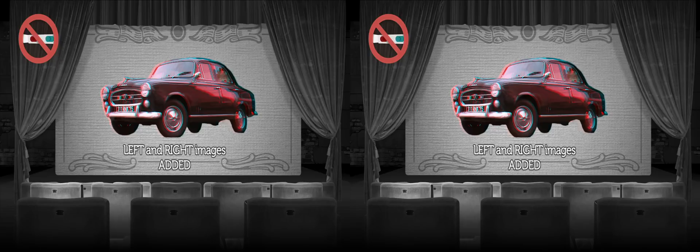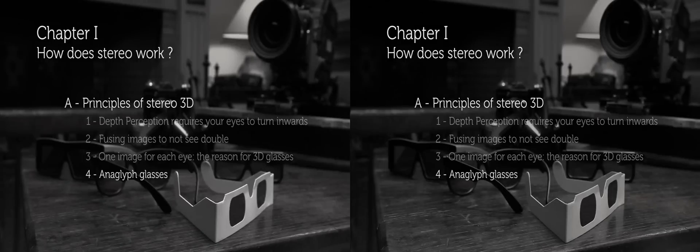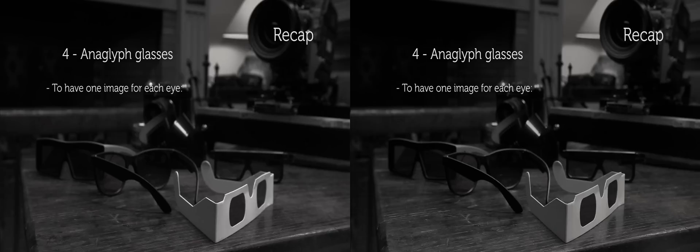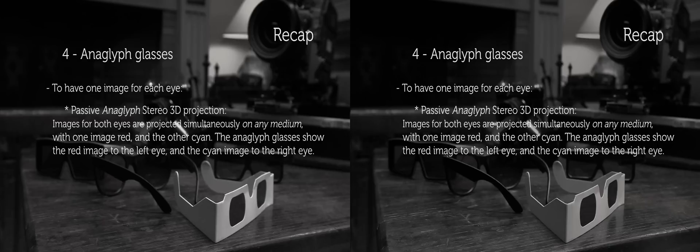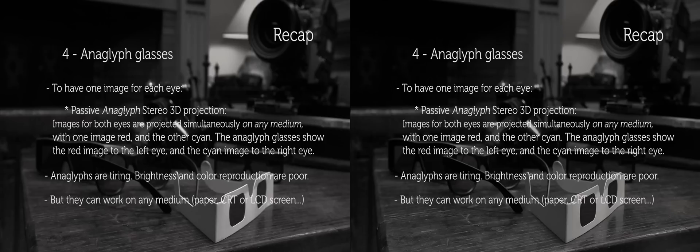Take your glasses off, and I'll show you how to build anaglyph images in post-production. It's quite simple: we remove the red component from the right image, which then becomes cyan. Then we take the blue and green components of the left image, which becomes red. We first superimpose these left and right eye images, then add them together — and that's our anaglyph image. It works for both color and black and white images. In passive anaglyph stereo 3D projection, images for both eyes are projected simultaneously on any medium with one image red and the other cyan. The anaglyph glasses show the red image to the left eye and the cyan image to the right eye. Anaglyphs are tiring, brightness and color reproduction are poor, but they can work with any medium — paper or any type of screen.